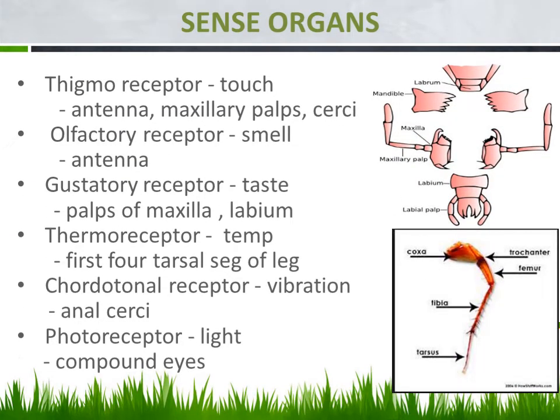Next, sense organs. The sense organs are the regions which receive signals from the external environment and transfer the signal to the central nervous system, and the brain responds accordingly. Without the sense organs sending the stimulus or signal, the brain cannot function. These are otherwise known as receptor organs, because they receive sense from the external environment. Six sense organs are available for the cockroach.